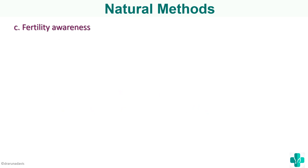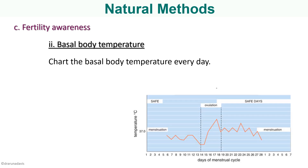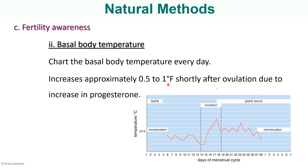Another method to be aware of fertility is the basal body temperature method. The woman charts her basal body temperature daily, and at the time of ovulation, the temperature increases by approximately 0.5 to 1 degree Fahrenheit due to an increase in progesterone. This method is more useful for those who want to conceive — to plan conception based on the temperature rise — rather than as a contraceptive method.